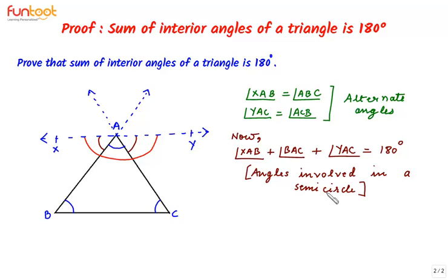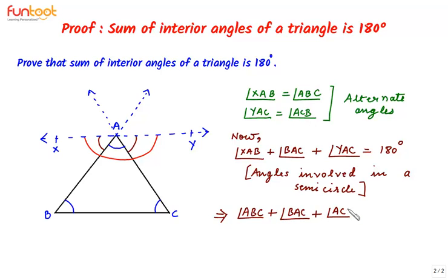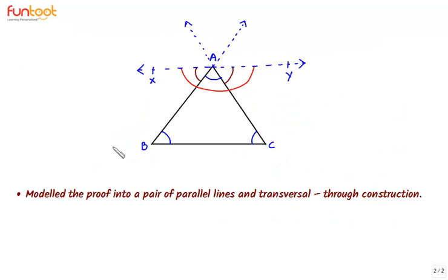In place of angle XAB we can write angle ABC, and in place of angle YAC we can write angle ACB. So angle ABC plus angle BAC plus angle ACB is equal to 180 degrees. This is what we had to prove — the sum of interior angles of triangle ABC is 180 degrees.